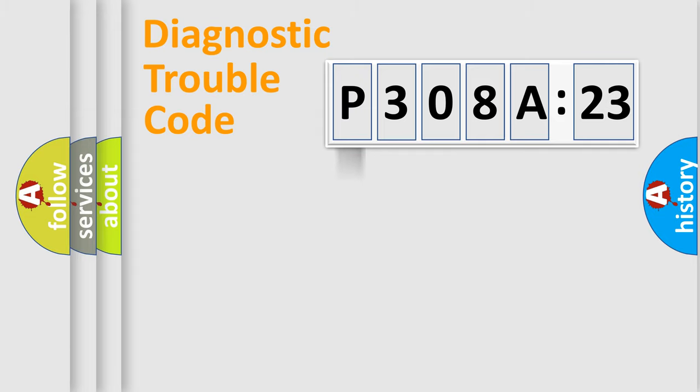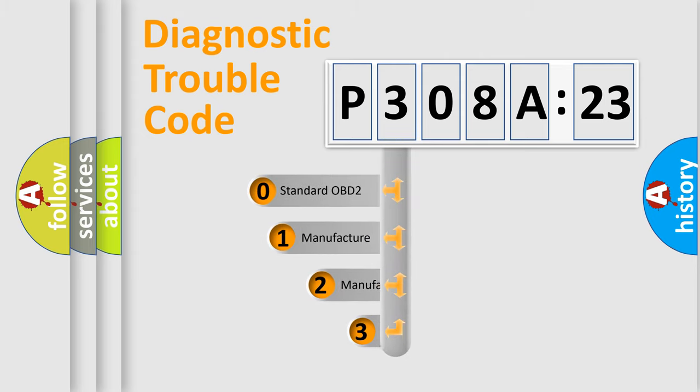Powertrain, Body, Chassis, Network. This distribution is defined in the first character code.